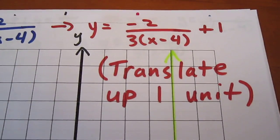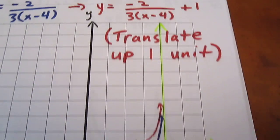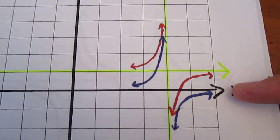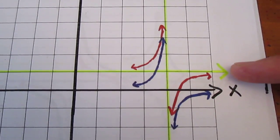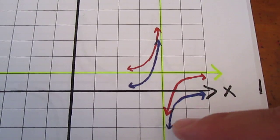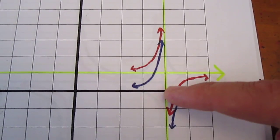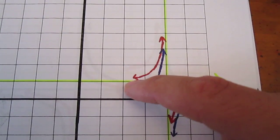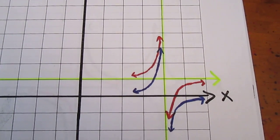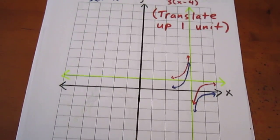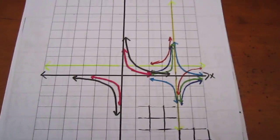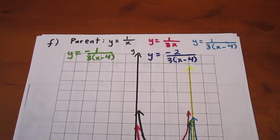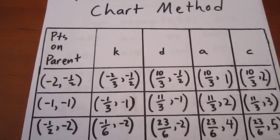Our last transformation is to translate up by 1 unit — the 5th of 5 transformations. We raise our horizontal asymptote up from y equals 0 to the line y equals 1, and we raise every point on the blue curve up 1 unit to get the red curve. That's what the final curve looks like. Viewing all transformations together on one graph would be quite painful, so we'll skip that and move on to the chart method.